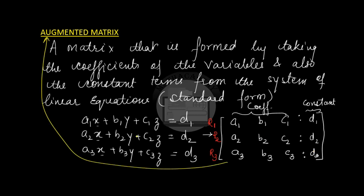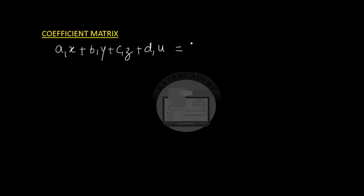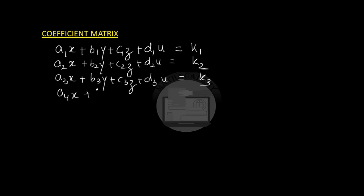If a variable is missing from one of the equations, we write its coefficient as zero. Now let us see what we mean by coefficient matrix. Let the system of equations have four variables, so there will be four equations: a1x + b1y + c1z + d1u = k1, through a4x + b4y + c4z + d4u = k4.